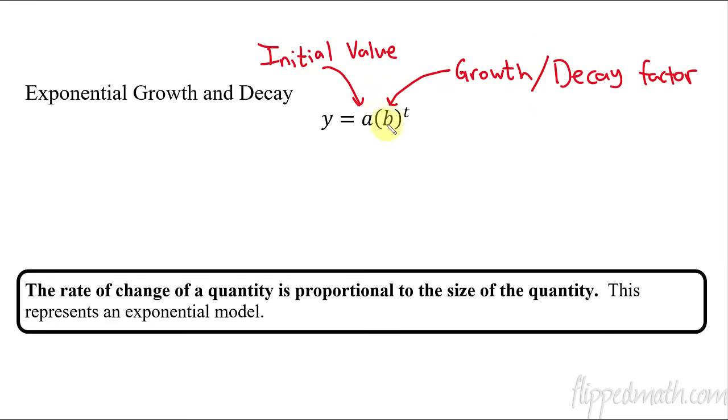So if b, that number there, the base of the exponent, if that's larger than 1, then we're going to be multiplying by a number larger than 1, and this initial value will grow. If b is smaller than 1, in between 0 and 1, then we're going to multiply this initial value by a number smaller than 1, which causes this to shrink.